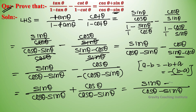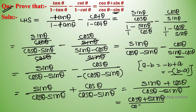The numerator becomes cos theta plus sin theta, and the denominator is cos theta minus sin theta. Therefore the expression equals cos theta plus sin theta upon cos theta minus sin theta, which equals RHS. Hence proved.